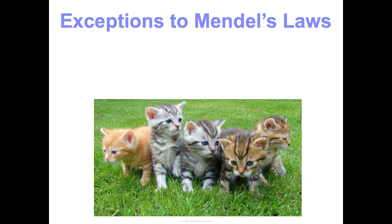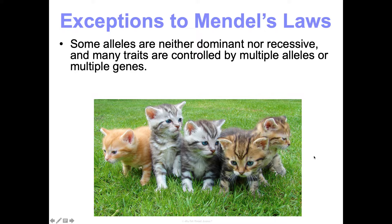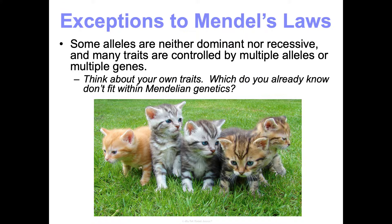We're going to start talking about exceptions to Mendel's laws. Mendel was studying plants and looking at either/or traits — only two options, like purple or white flowers. But as we can see, that's not really the case for a lot of traits such as fur color, where there's a lot of variation. Some alleles are actually not dominant or recessive, and many traits are controlled by multiple alleles or even multiple genes.